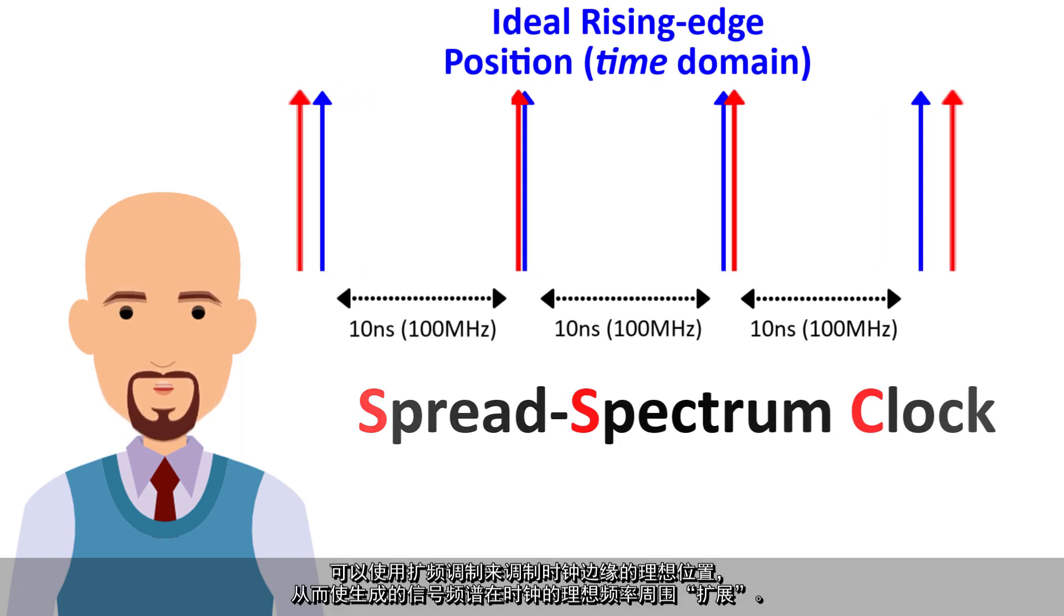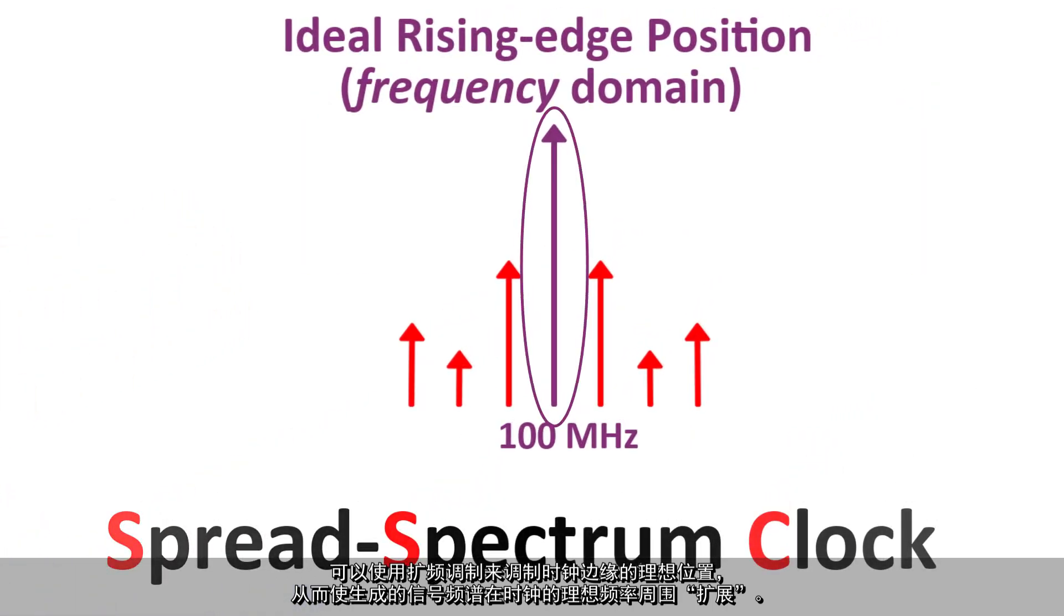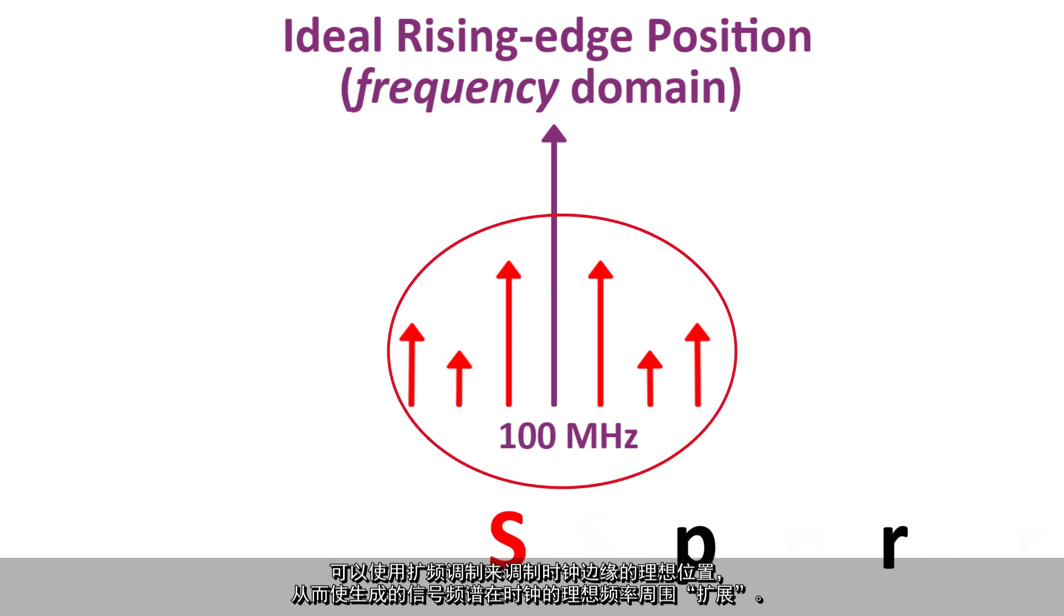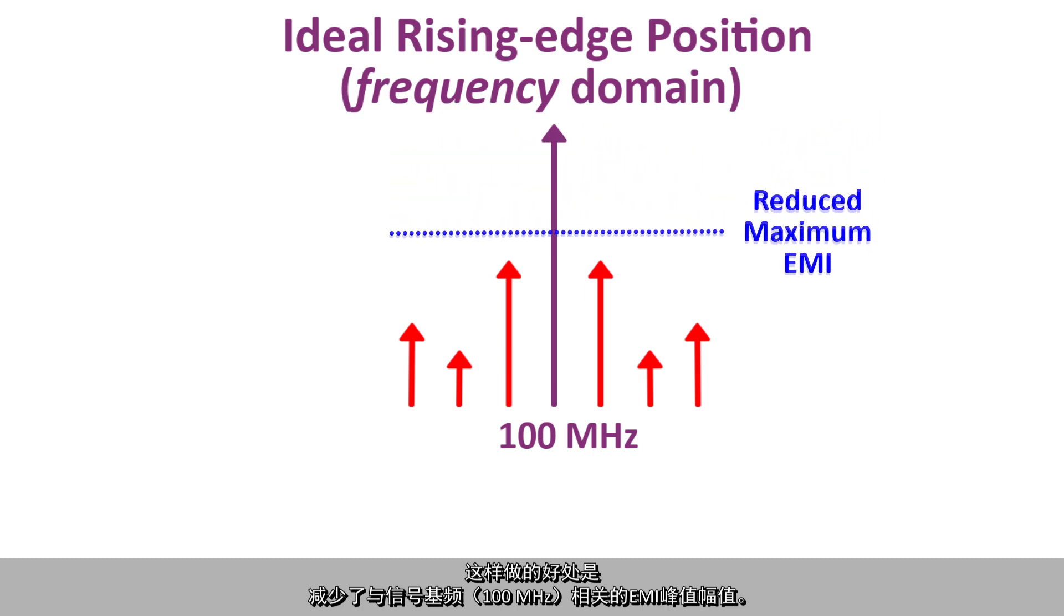Spread spectrum modulation is used to intentionally modulate the ideal position of the clock edge such that the resulting signal spectrum is spread around the ideal frequency of the clock. This has the advantage of reducing the peak amplitude of the EMI associated with the fundamental 100 MHz frequency of the signal.